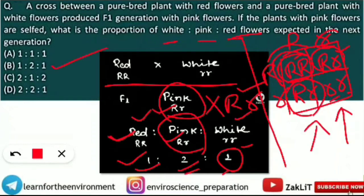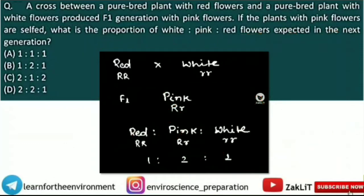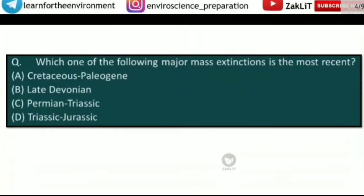So option B — 1 is to 2 is to 1 — is the correct answer. If you haven't understood, you can ask in the comment section. Let's move to the next question.